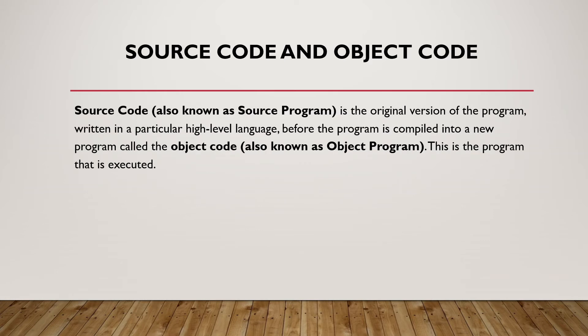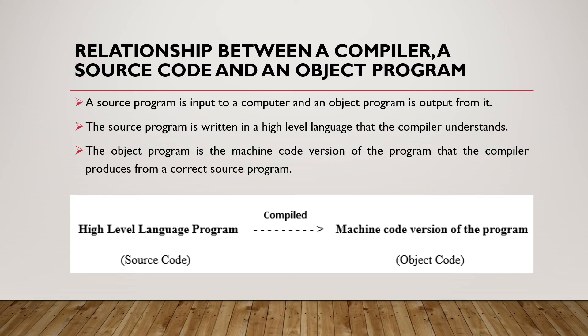The source code, also known as the source program, is the original version of the program written in a particular high-level language. Before the program is compiled into a new program called the object code, also known as the object program — this is the program that is executed.